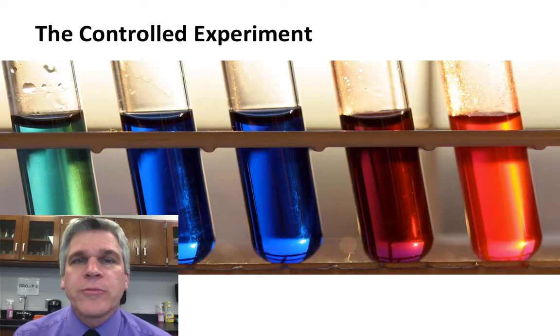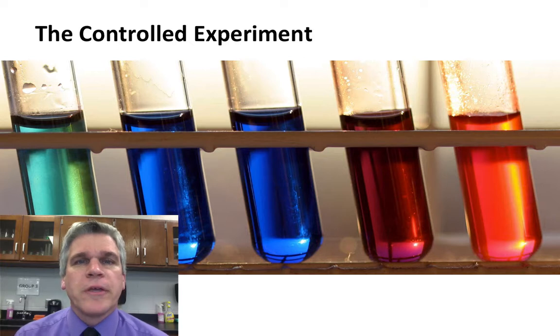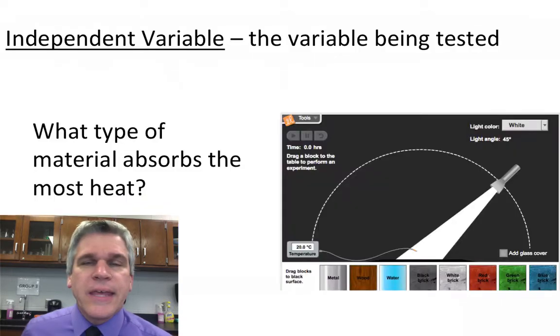This year in science class, you are going to be doing quite a bit of hands-on activities, many of which are going to be a controlled experiment. So we need to talk a little bit about what that is and how we would set one up. In a controlled experiment, there are different types of variables.